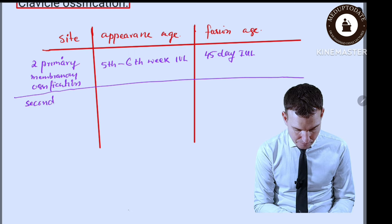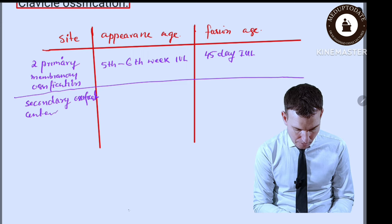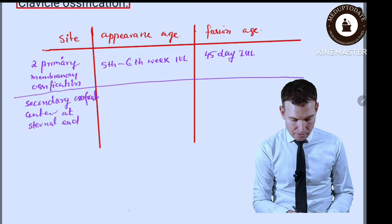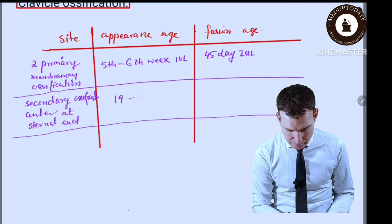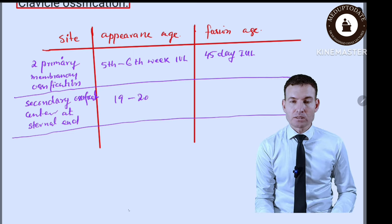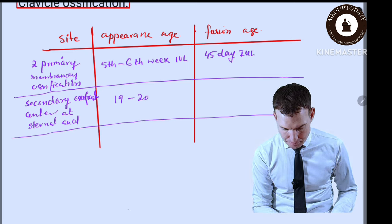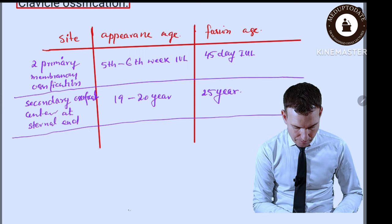A secondary ossification center appears at the sternal end at the age of 19 to 20 years and fuses at the age of 25 years.